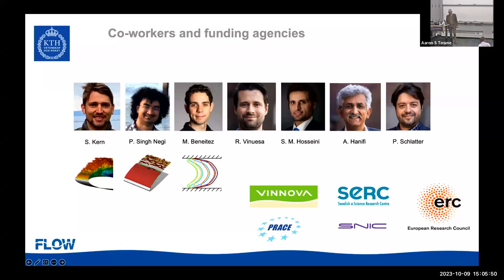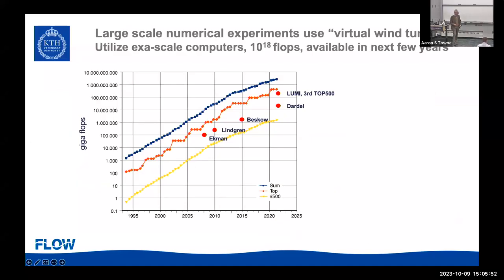Large-scale numerical experiments or simulations can be thought of as a virtual wind tunnel. For many years we've had the idea that we're going to get exascale computers, and it's more or less here now — 10 to the 18 flops. Here is the top 500 list — these dots are the fastest computers in the world.